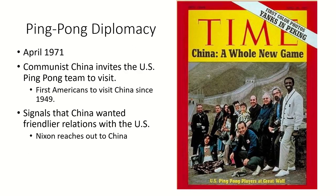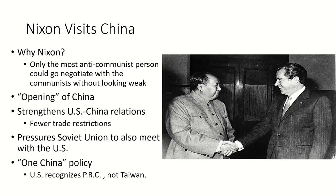Détente began in April of 1971 with ping-pong diplomacy. The U.S. ping-pong team was playing a match in Japan when the communist Chinese government invited them to come play an exhibition and visit their country. These were the first Americans to be invited since the Chinese revolution in 1949. Nixon read this as a signal that China wanted friendly relations with the United States.